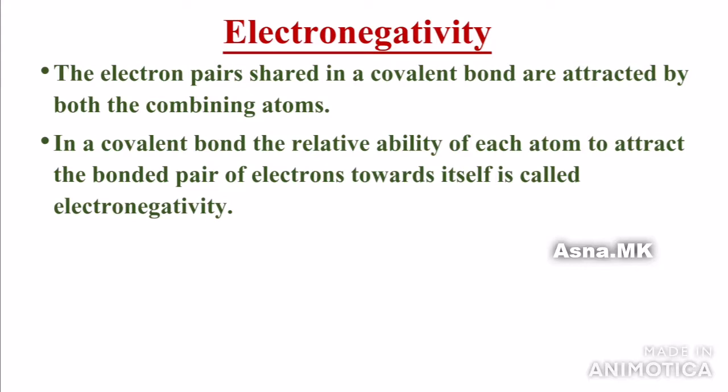That is the ability of electronegativity. In the case of HCl, we use hydrogen and chlorine — two of them. You can use the properties of electrons attracted towards it.